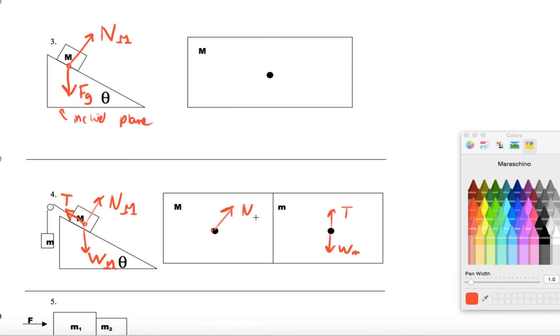I guess I can copy that here. So, N on big M, weight of big M, and tension going up like that.